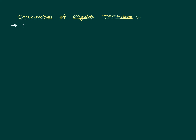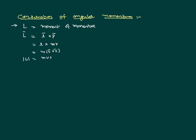Angular momentum, represented with the letter L, is defined as moment of momentum. Moment of is a way of saying that we have to multiply with the distance. So moment of momentum means r-bar cross p-bar, where r is the distance from the axis of rotation at which we are calculating the angular momentum. It is also clear from the way we have written it that angular momentum is a vector quantity — the cross product of the radius vector and the linear momentum vector. We can further write r-bar cross p-bar as mvr.